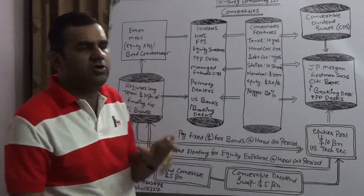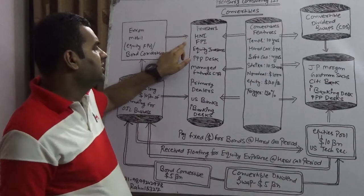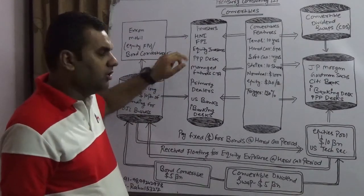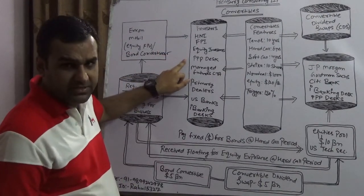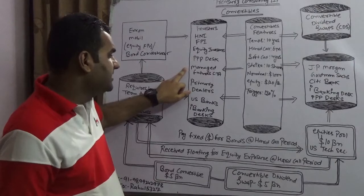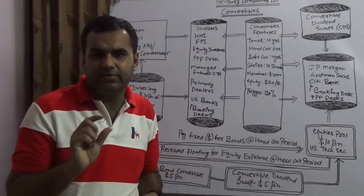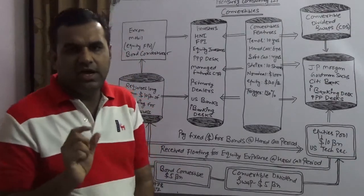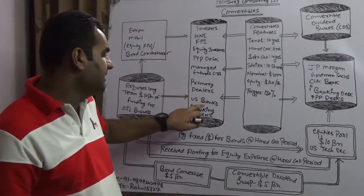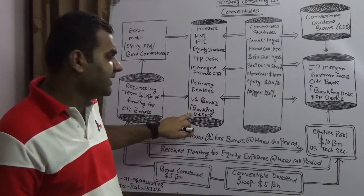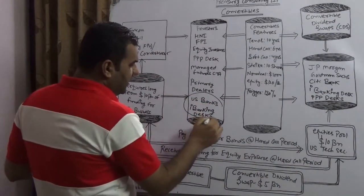Now for investors — if you are talking about ExxonMobil — we would have a big set of investors, which covers high net worth individuals, foreign portfolio investors, equity investors, PPP desk (private placement program desk), managed futures CTAs (commodity trading advisors, although they invest in equities as well), primary dealers, US banks, and an iBanking desk. Now these last two — US banks and iBanking desk — will play a dual role here.